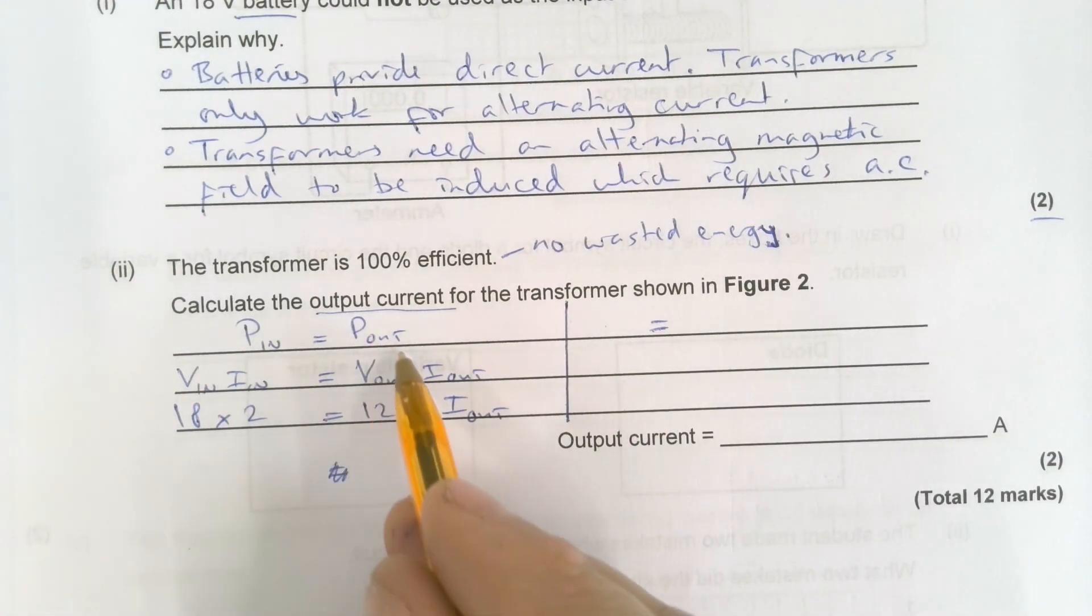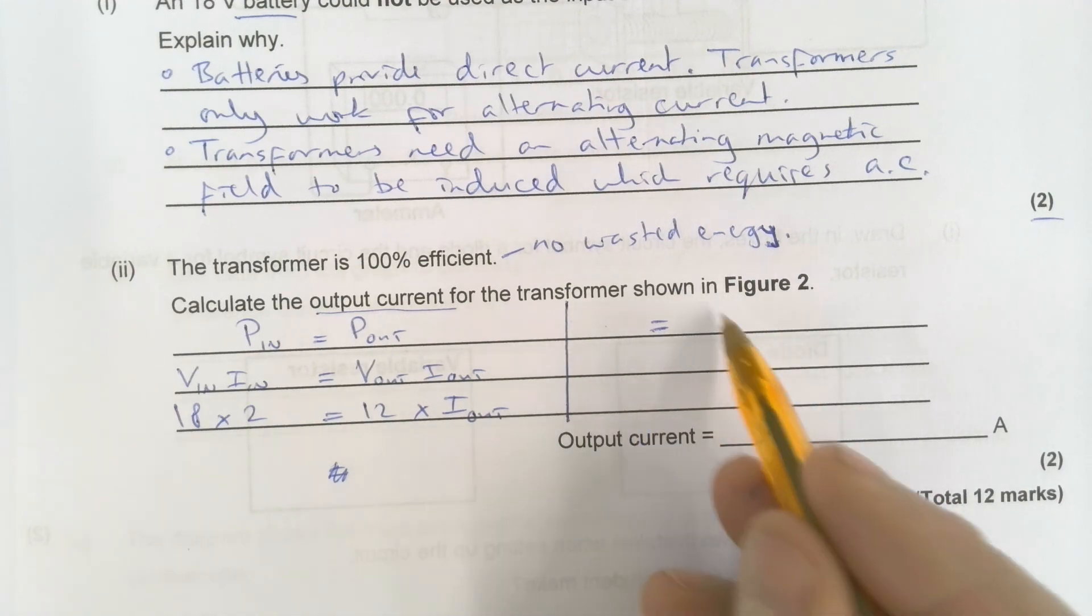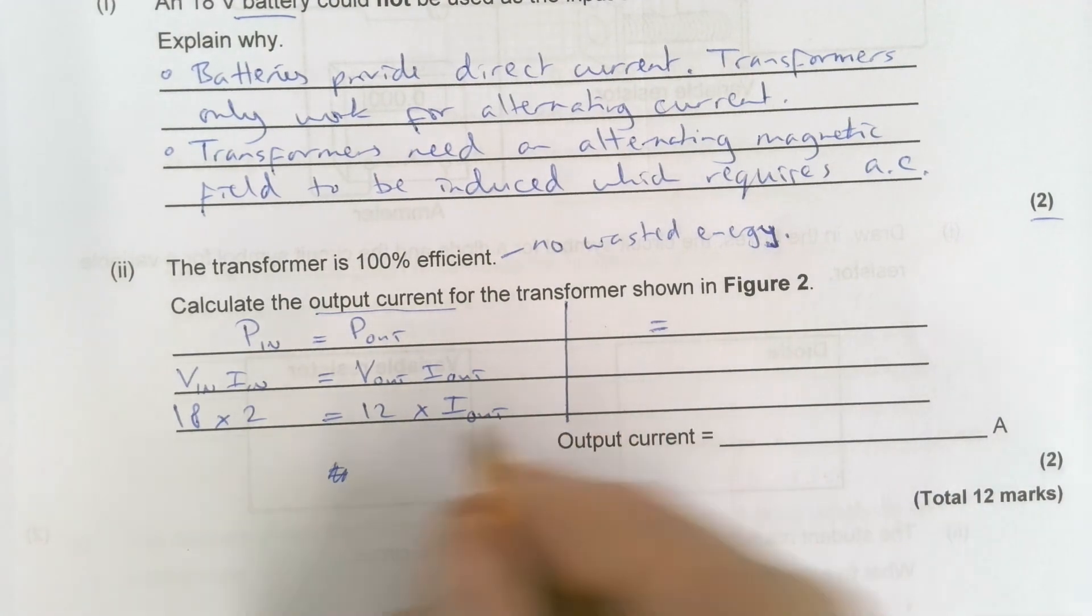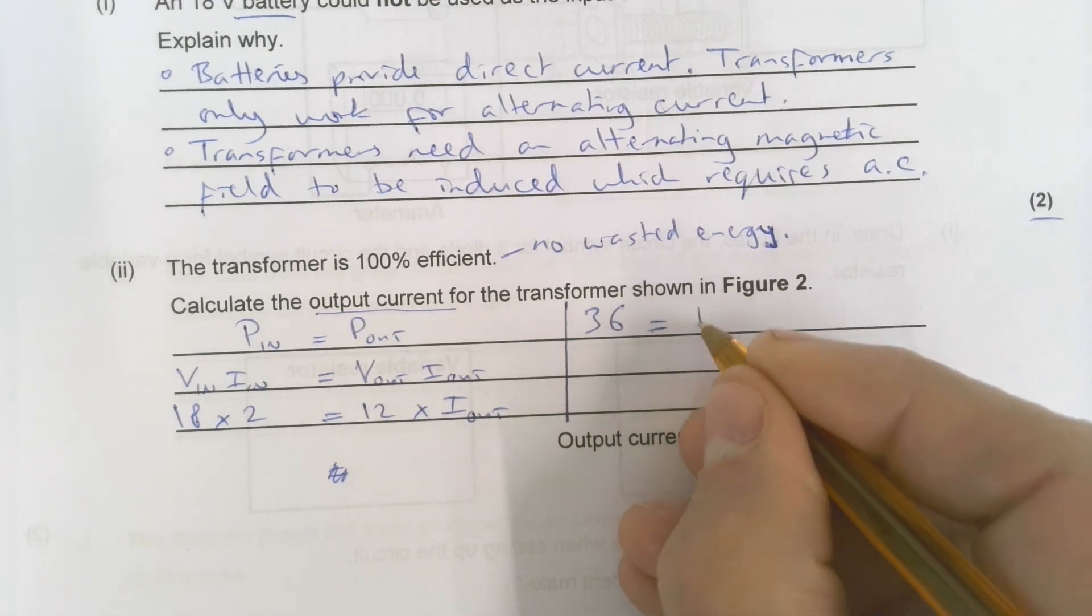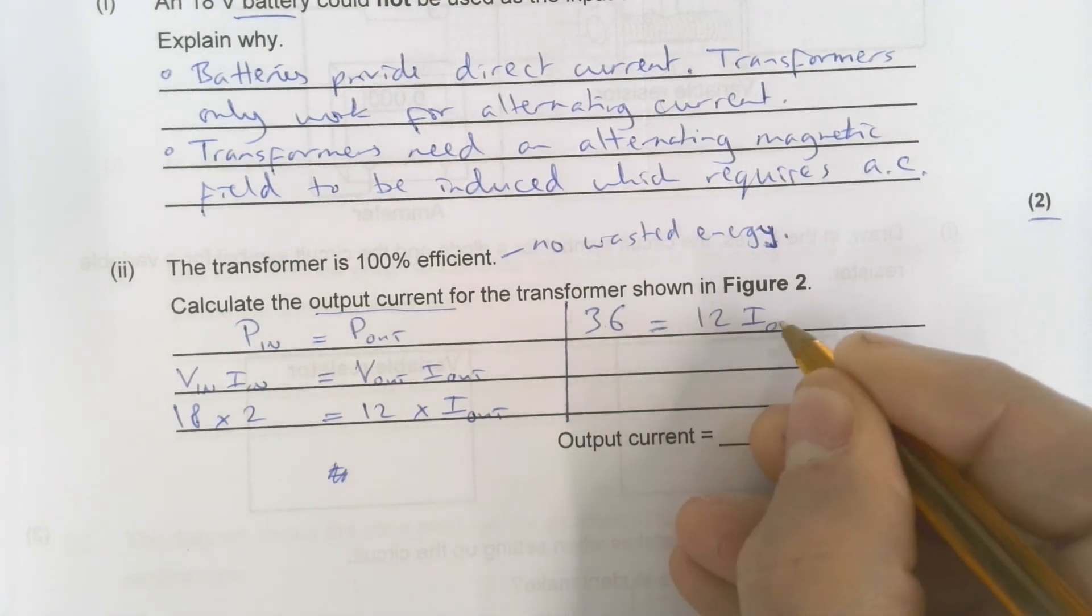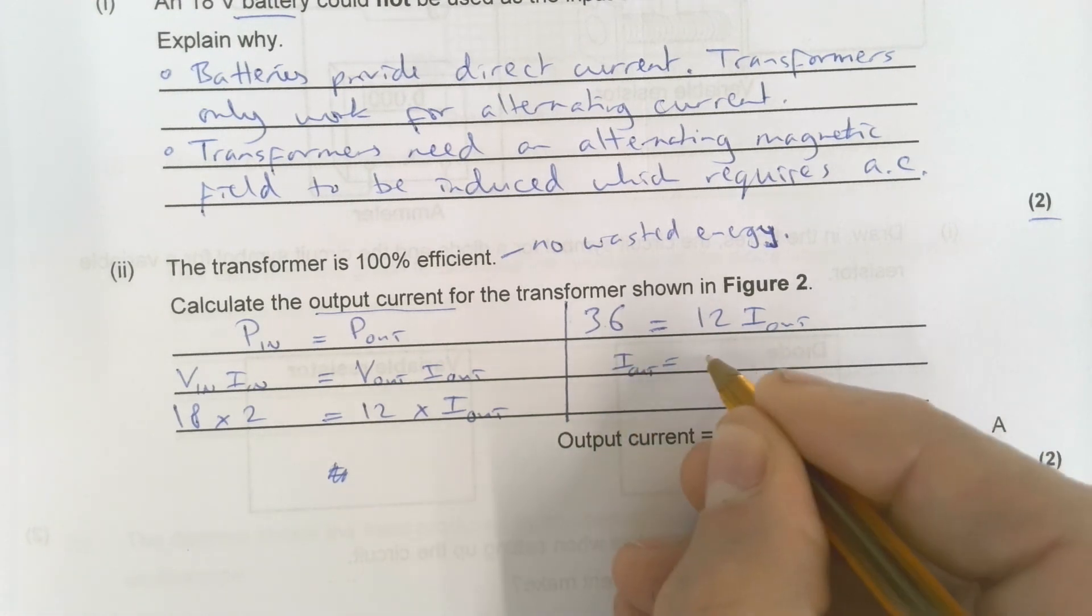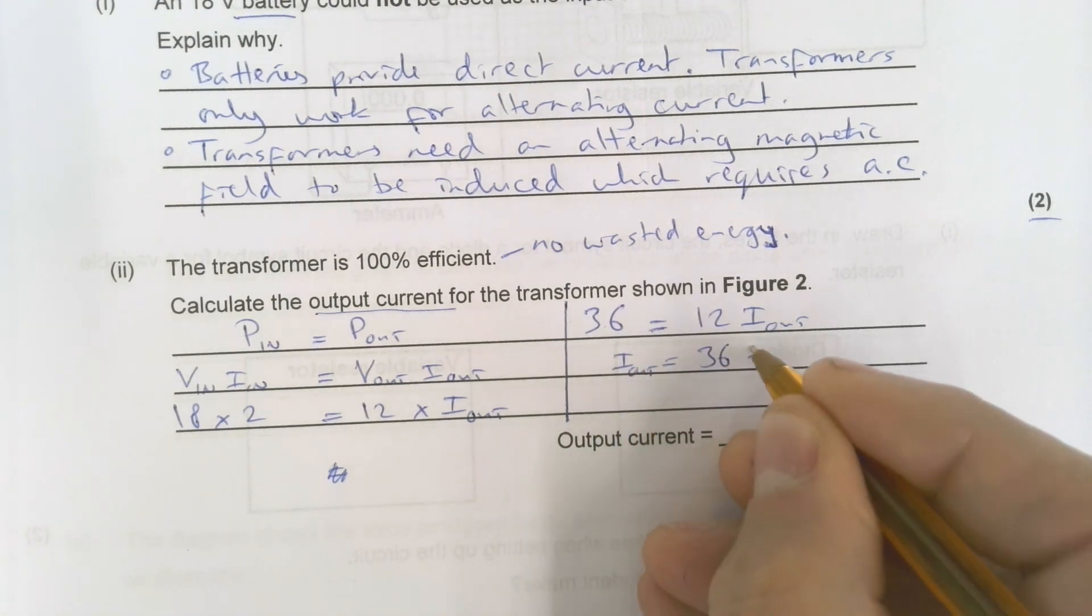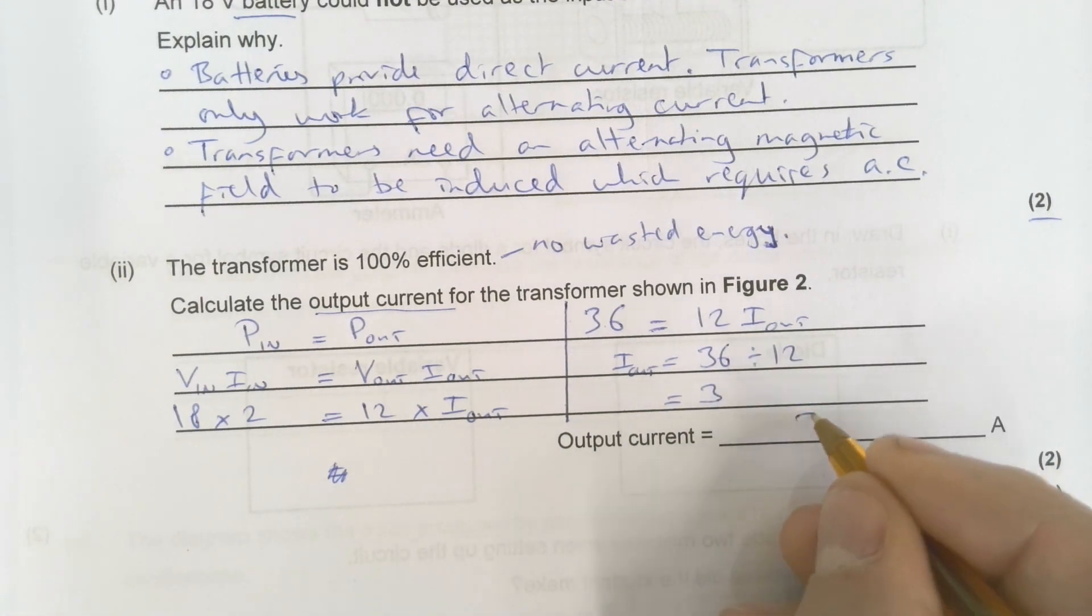If I had written without just here if I just written equals and then continue my calculations that would be wrong because suddenly I'm saying that P out is equal to whatever it is as soon as I start rearranging. So if I put the line down there I'll just make absolutely sure I'm not going to lose marks because the examiner knows that these calculations are not necessarily connected on the same line as these calculations here. So 18 times 2 which is 36 is equal to 12 I out. I out is equal to 36 divided by 12 which is equal to 3. So the answer is 3 amps.